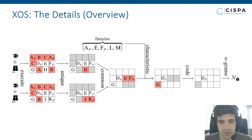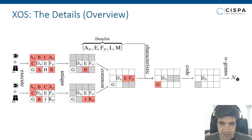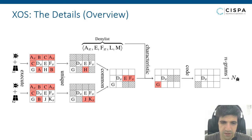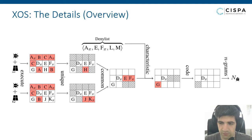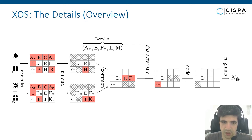Here we can see a more detailed overview of how our approach actually works — this is a figure that can be found in our paper. We will go into the details of every step in the following slides. At a very high level, we start with a malware executed on two different Windows versions, then go through a process to produce a fingerprint for the malware on the right-hand side.